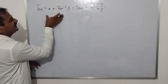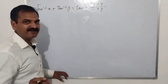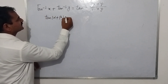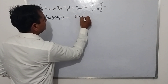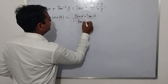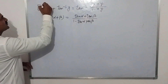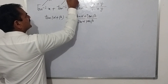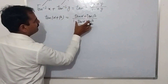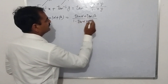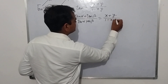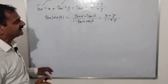This result is obtained with the help of the tan(α+β) formula. tan(α+β) equals tan α plus tan β divided by 1 minus tan α·tan β. So I substitute the values of tan α and tan β in terms of x and y, and it becomes x plus y divided by 1 minus xy.